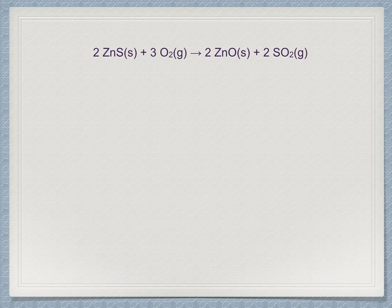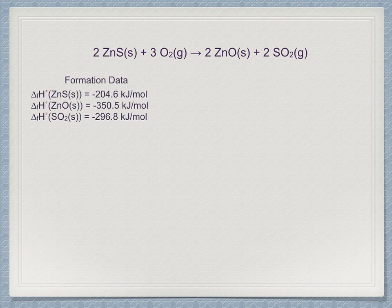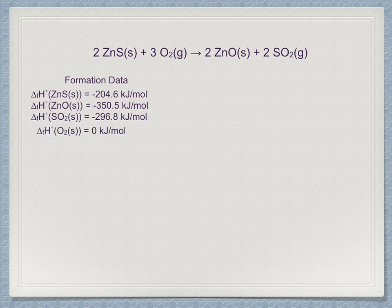We look up in tables the enthalpy of formation for each of the participants in the reaction. One place to look for this information is Wikipedia. It gives the following values: minus 204.6 for zinc sulfide, minus 350.5 for zinc oxide, and minus 296.8 for sulfur dioxide, all in kilojoules per mole. Now, I didn't list a value for oxygen. Why? Well, because this is an element in its standard state, so the enthalpy of formation is, by definition, zero.